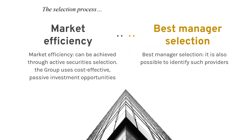In the selection process, portfolio construction aims to select appropriate investment instruments to reproduce the target weightings for respective investment classes. VP Bank Group follows two principles: market efficiency — where little added value can be achieved through active security selection, the group uses cost-effective passive investment opportunities such as exchange-traded funds (ETFs); and best manager selection — in markets where active managers can generate added value, VP Bank selects the best available fund manager.